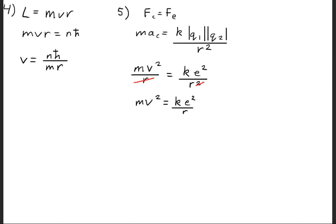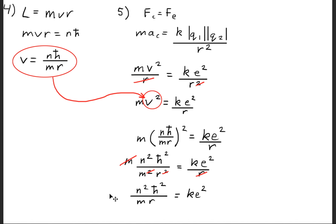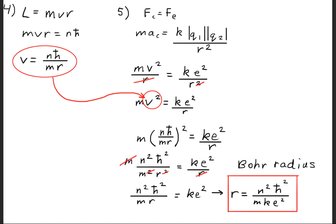Recalling that mv squared equals ke squared over R, we substitute the velocity expression into that relationship, expand, and simplify to get n squared times h-bar squared over m times R equals ke squared. Solving for R gives R equals n squared times h-bar squared over m times the Coulomb constant times e squared. This is the Bohr radius, which we also derive in this process.